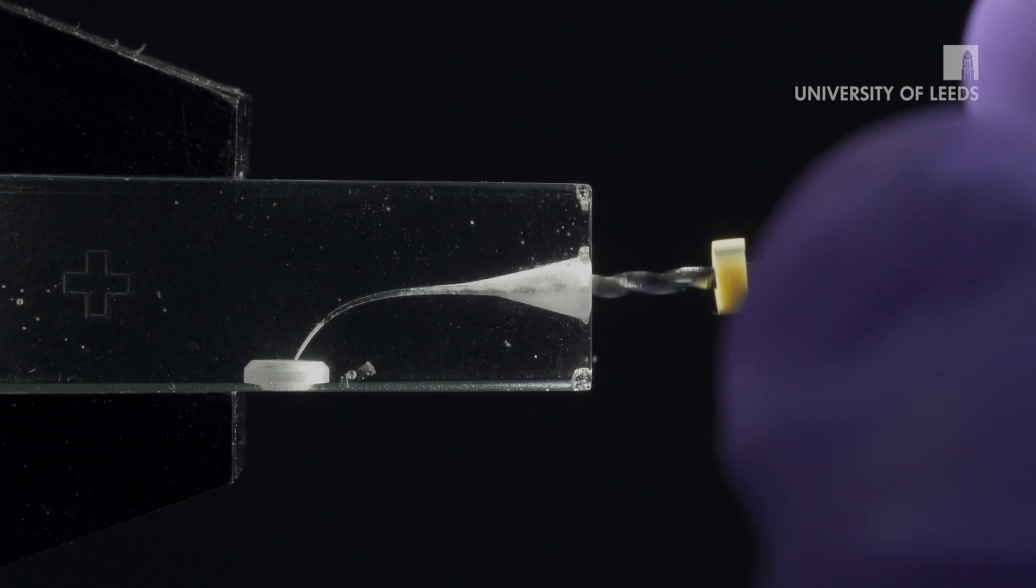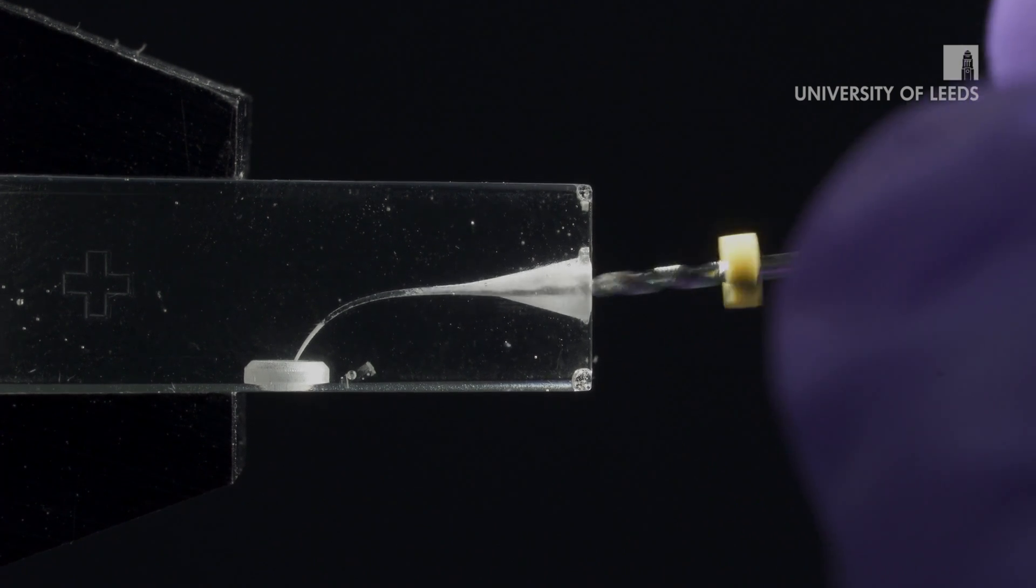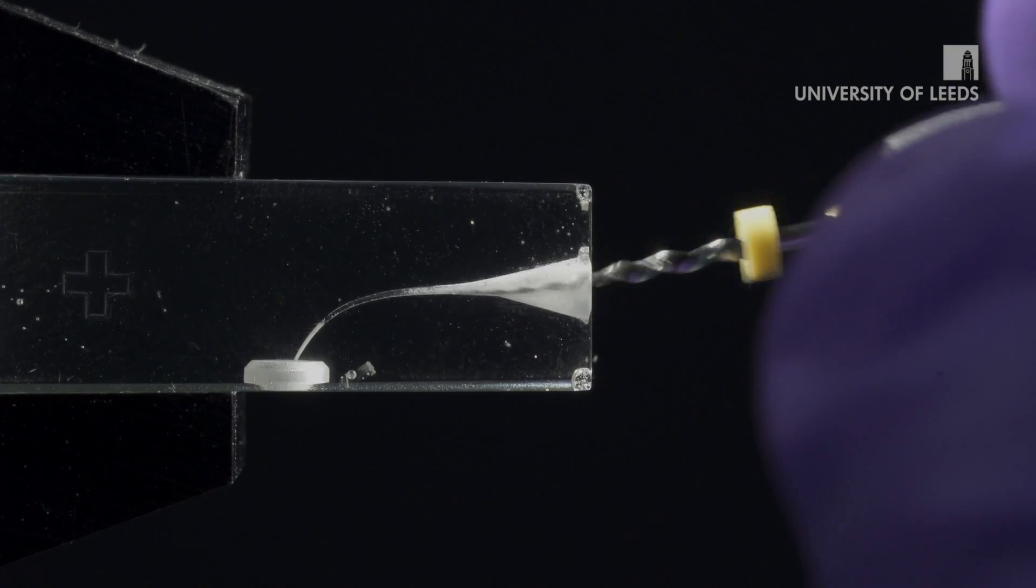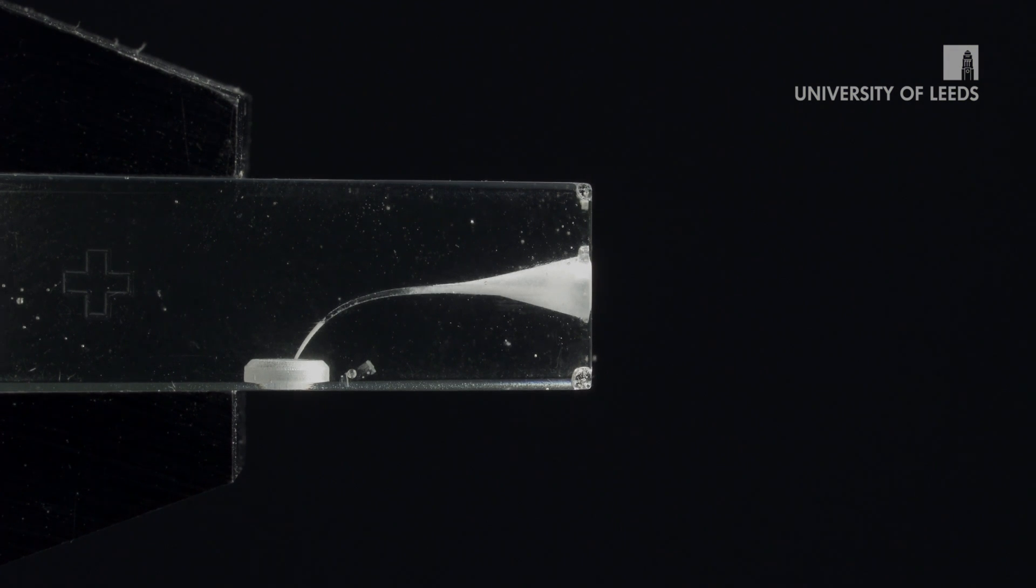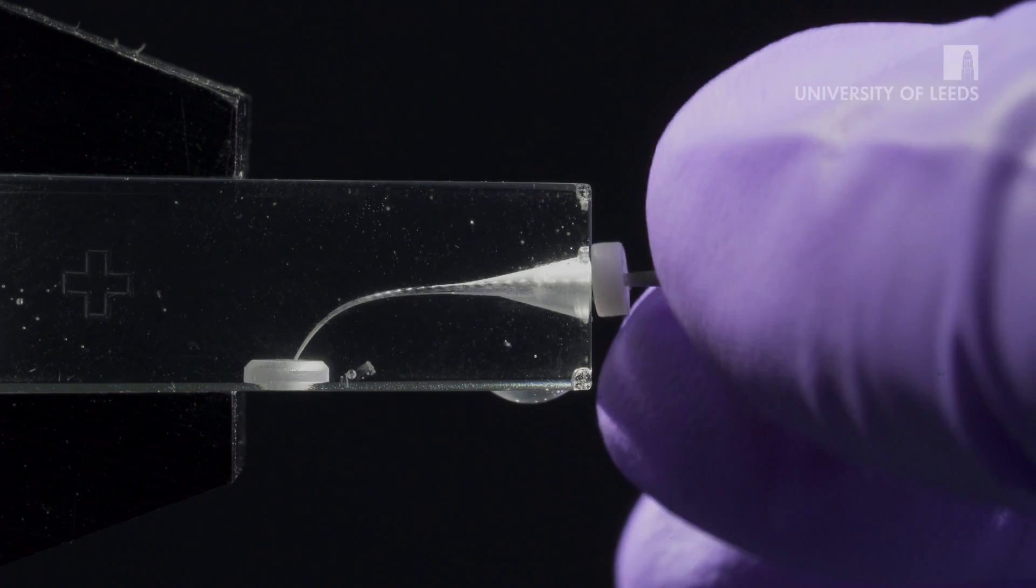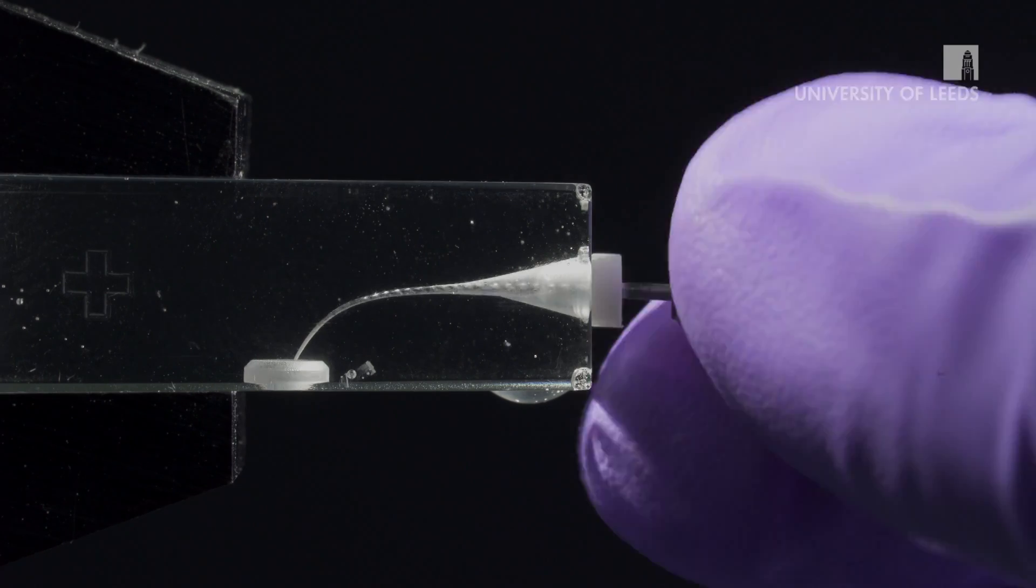This motion is repeated until sufficient coronal shape is achieved. You will notice that as the coronal flare increases, the file will automatically penetrate further into the canal. Once the coronal portion of the canal has been prepared, the apical glide path can be prepared.